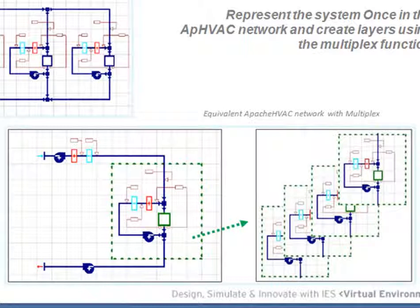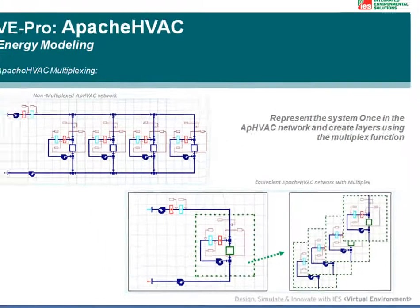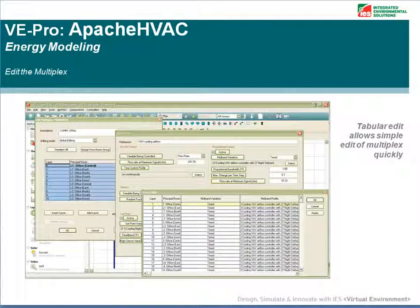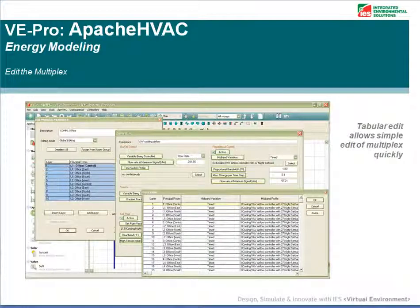This fan coil unit can then be multiplexed. When a multiplex is created the system can be layered so that there are multiple layers — four in this case — representing each of the four zones and systems. You can easily edit the inputs for the layers in your multiplex using the tabular edit function, which allows you to select multiple layers and variables to edit at one time. You can also copy and paste the inputs directly from Excel.